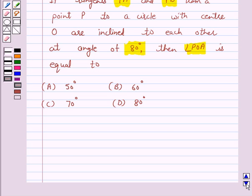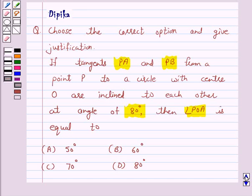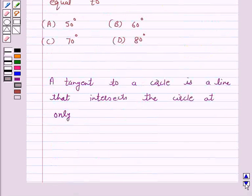Let us first understand the tangent to a circle. A tangent to a circle is a line that intersects the circle at only one point. This is the key idea behind our question.